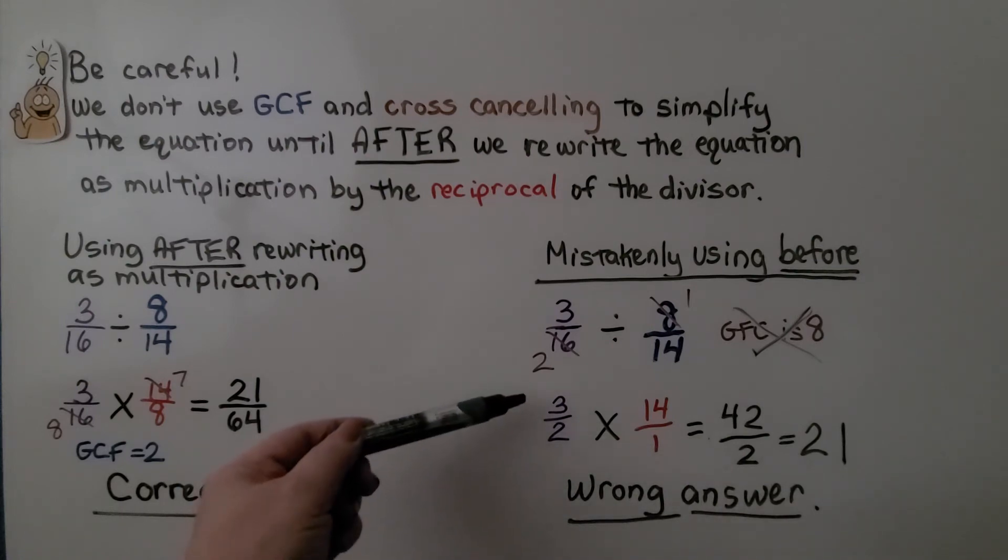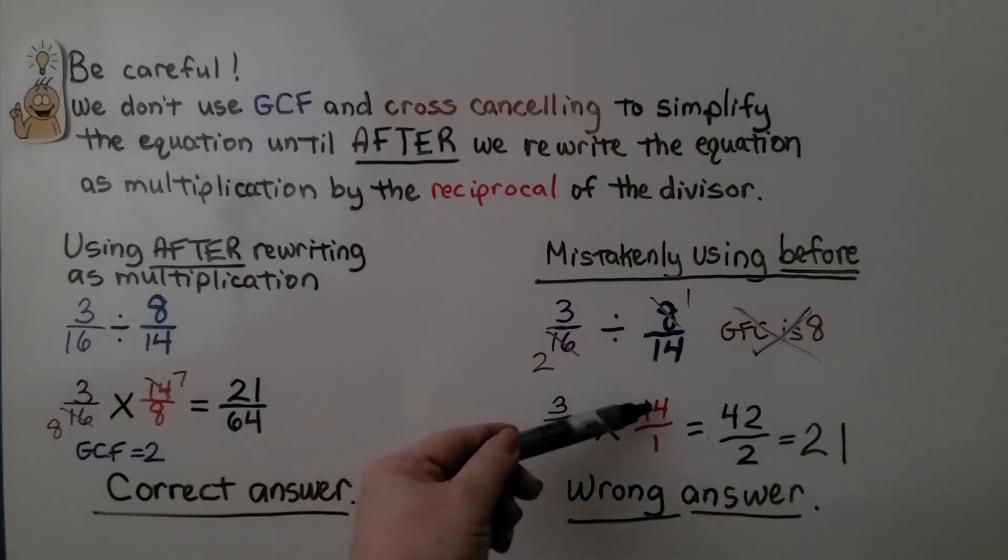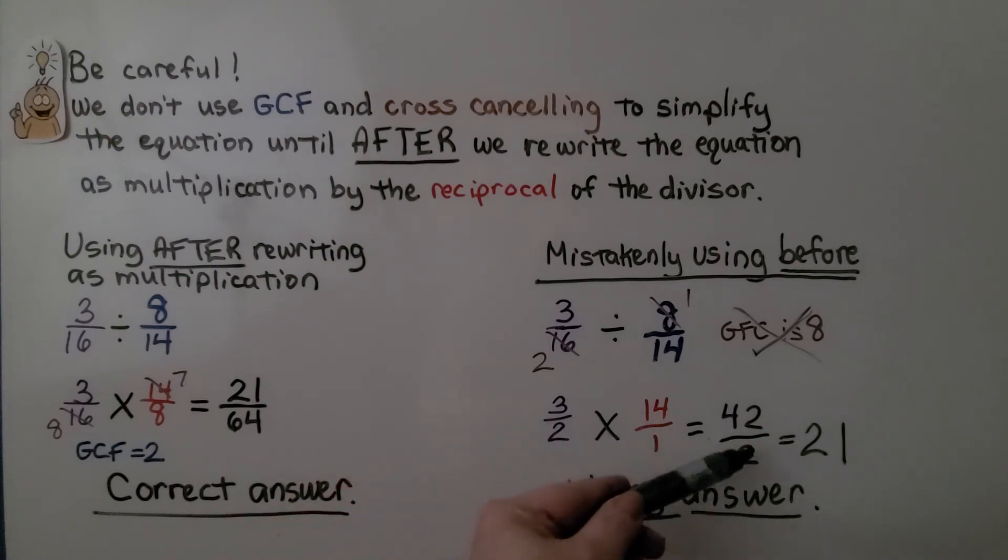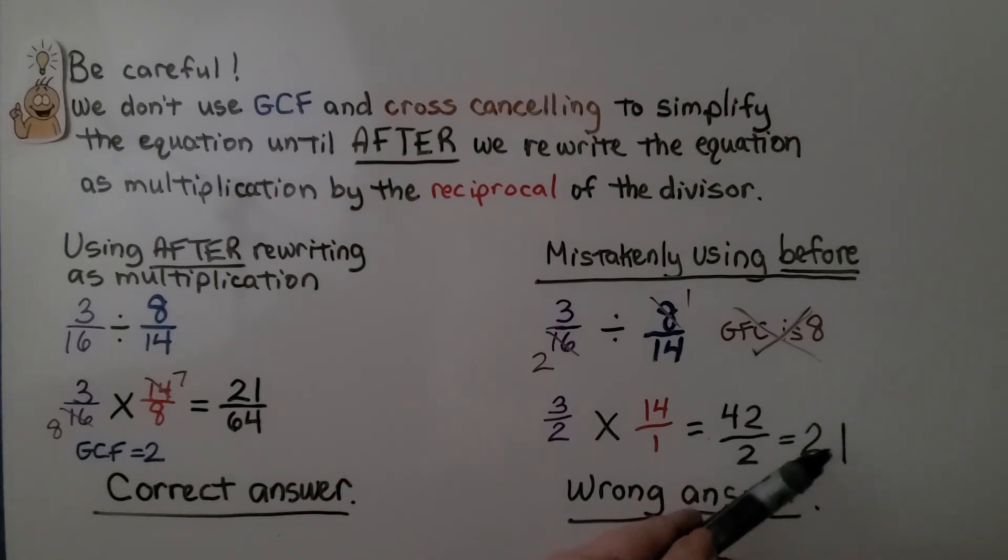Then we might try multiplying 3 times 14, which is 42, and 2 times 1 is 2. And when we simplify it, 42 divided by 2 is 21. We're going to think the correct answer is 21 whole as a whole number instead of this fraction 21 64ths.